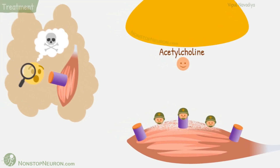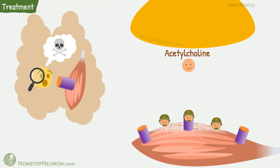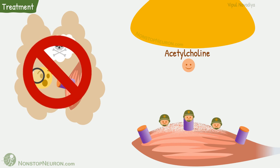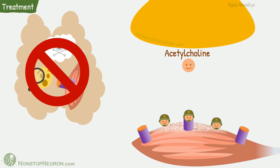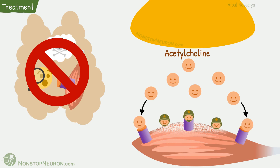Based on this pathophysiology, treatment of myasthenia gravis is aimed at either reducing the immune attack, or increasing acetylcholine concentration at the synapse so it can activate the remaining normal receptors. We will study them in detail in a separate video.